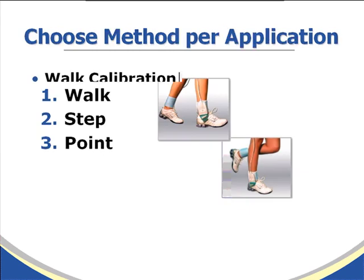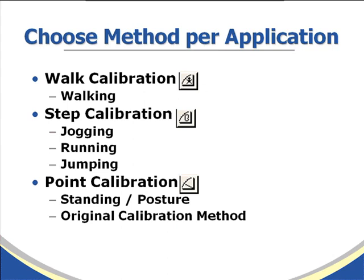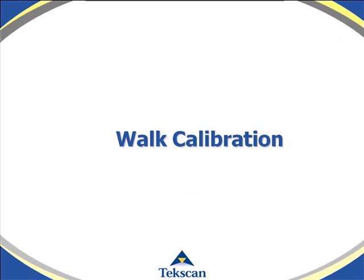There are three available methods with the Fscan system: walk calibration, step calibration, and point calibration. Walk calibration is best suited for subjects that are just walking at a normal pace. Step calibration is best for jogging, running, jumping, or any other maneuver that isn't normal walking. Point calibration is best suited for standing or posture studies, and it's also the original calibration method used in previous versions of the software, so if you're more comfortable with it, you can continue to use that one.